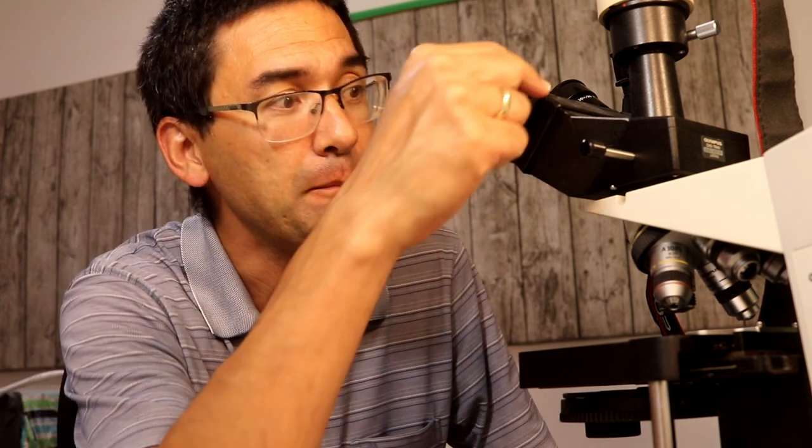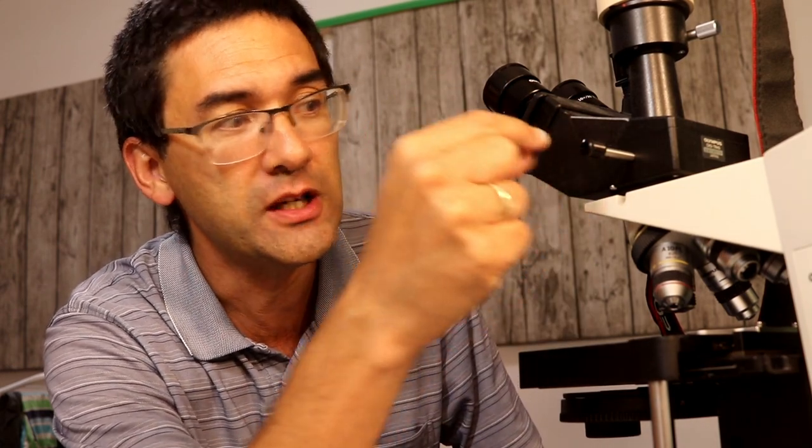Many of these microscopes these days are so-called infinity microscopes, which allow you to add additional elements into the tube here before the light reaches the eyepiece. There's usually a slot where you can add additional elements, and this also increases the price. So I think what you need here is a low-cost polarization microscope with just the bare features, and I'm worried that's going to be difficult to get.